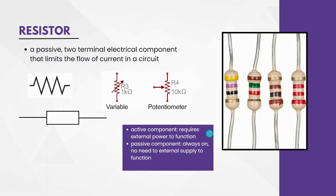An active component is one that requires external power to function. For example, some semiconductor devices like transistors and op-amps all require external power in order to function. Whereas a passive component like a resistor, inductor and a capacitor, these components always function without requiring any external power. For example, if you just connect a resistor in any closed circuit, the resistor will do its job of blocking the flow of current. That is why we call it a passive component.